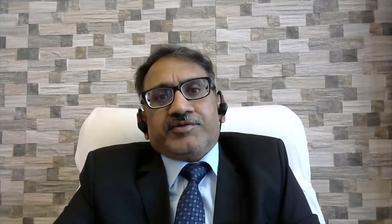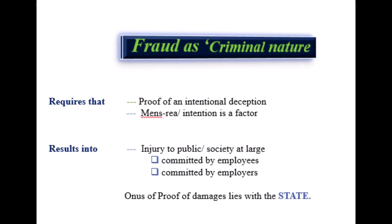Vendors commit fraud against the company by price fixation and by supplying inferior quality goods. Fraud may be of a civil nature or a criminal nature. In civil matters, mens rea is not as important; damages are required to be established, and civil matters deal between persons. While in criminal cases, the society at large is affected, and intention — mens rea — must be established. The fraud may be civil as well as criminal.